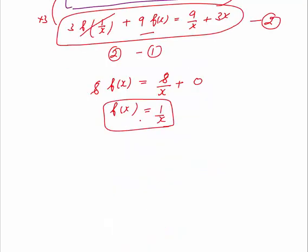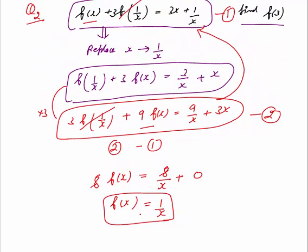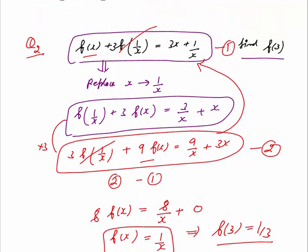So f(x) = 1/x. The question asks for f(3), so put x = 3: f(3) = 1/3. That is the final answer. The key strategy in this type of question is to replace x with 1/x to create a second equation, eliminate f(1/x), find f(x), and then compute any required value.